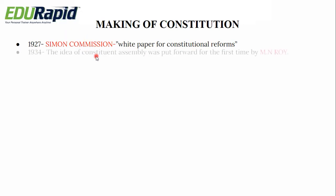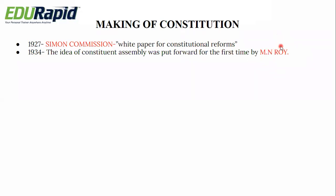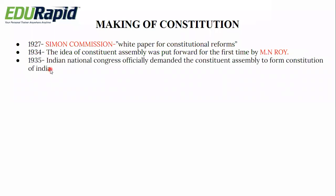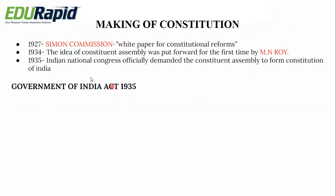In 1934, the idea of a Constituent Assembly was put forward for the first time by M.N. Roy, the pioneer of the communist movement in India. The very next year in 1935, the Indian National Congress officially demanded a Constituent Assembly to form the Constitution of India. So it was first proposed by M.N. Roy in 1934, then officially demanded by the Indian National Congress in 1935.